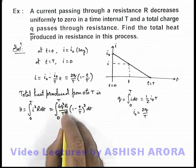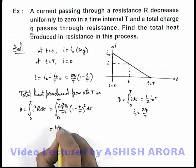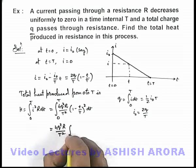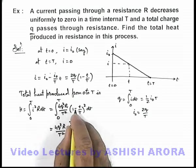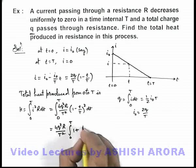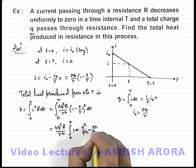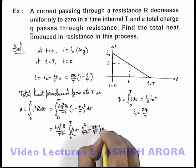Now this is a constant term which can be taken out of the sign of integration: (4q²R/T²). Then we'll integrate by opening this term (1 - t/T) whole square. This will be 1 plus (t²/T²) minus 2t/T, dt.